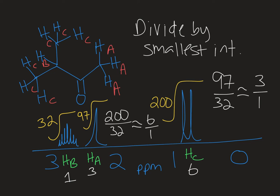So the numbers aren't going to be perfect, but they're going to be close, and if you divide by the smallest integral value, then you can find the relative ratio pretty easily that way.